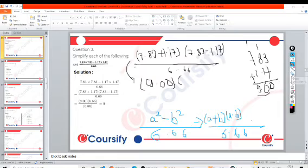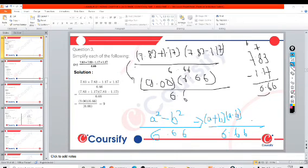7.83 minus 1.17. So at 3, then it will be 7. We get 6.66.